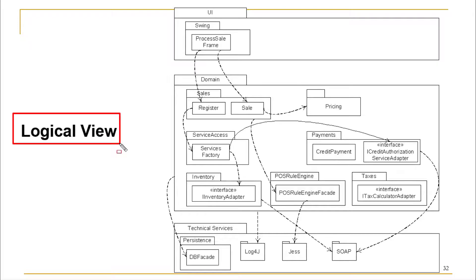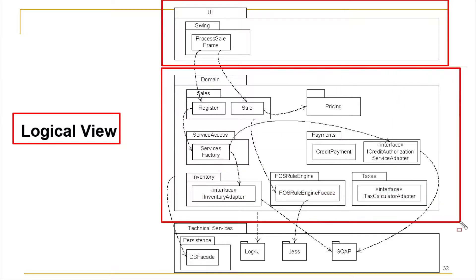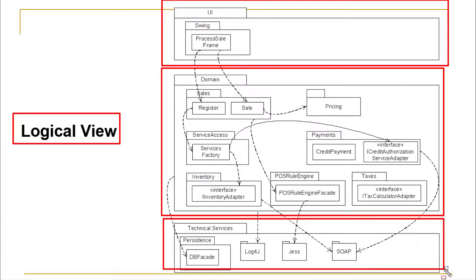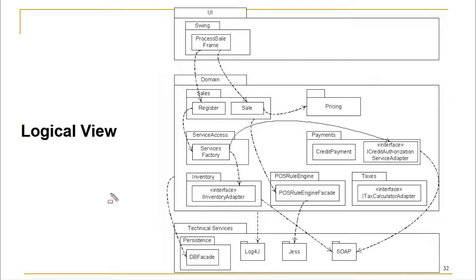Here is an example of a logical view, which shows the organization and structuring of layers and packages. The system is arranged into layers including the UI layer, domain layer, and technical services layer. Each layer has further packages that interact with or depend on other packages. This is one possible graphical representation of the logical view of the system.